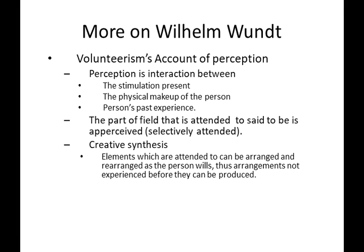Voluntarism's account of perception: perception is the interaction between the stimulation present, the physical makeup of the person, and the person's past experience. So we have the object in the real world, the stimulation present, the physiological capabilities of that person, and the person's past experience — their education, their biases, their focuses. The part of the field that is attended to is said to be apperceived — selectively attended, apperceived.